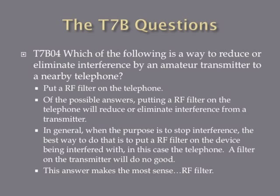Which of the following is a way to reduce or eliminate interference by an amateur transmitter to a nearby telephone? The answer is put an RF filter on the telephone. When you need to stop the interference, the best way to do that is with an RF filter on the device being interfered with — in this case, that would be the telephone. Putting a filter on the transmitter is not going to do any good, so the RF filter on the telephone makes the most sense.